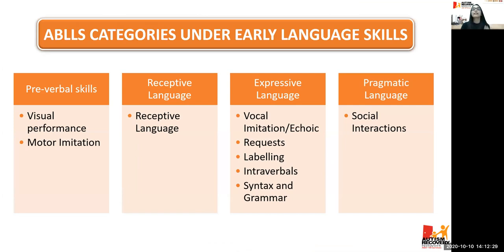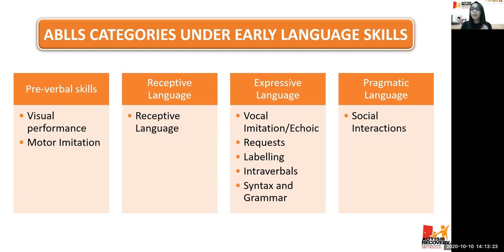I have classified ABLES categories under early language skills based on speech therapy aspects. Under pre-verbal skills, we have visual performance and motor imitation. Under receptive language, there is receptive language. Under expressive language: vocal imitation or echoic, request, labeling, intraverbals or conversation, and syntax and grammar. Under pragmatic language, it includes social interaction. These are the categories covered in our ABLES program at ARN.